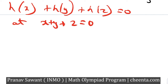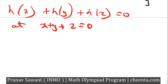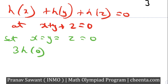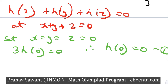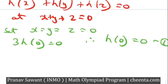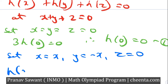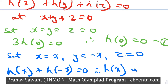This is actually a pretty simple functional equation to solve. Setting x = y = z = 0, we get 3·h(0) = 0, so h(0) = 0 — label this equation one. Next, setting x = x, y = −x, z = 0, we get h(x) + h(−x) = 0, which means h(x) is an odd function.